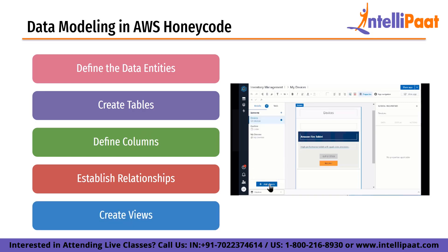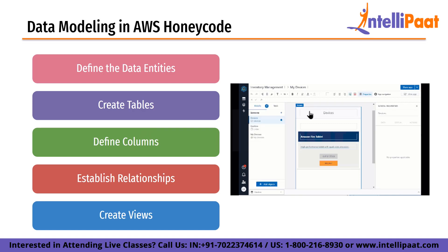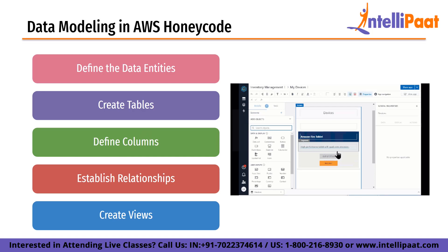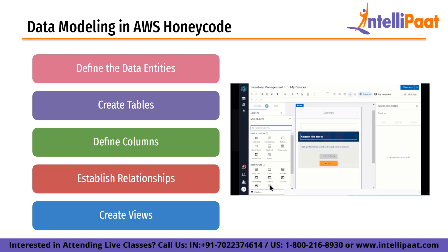Finally, create views. After the tables and relationships are defined, the next step is to create views that define how the app will display the data. Views are used to organize and present data in a way that is meaningful to users, and can be created for each entity or for specific tasks such as reporting or data entry.